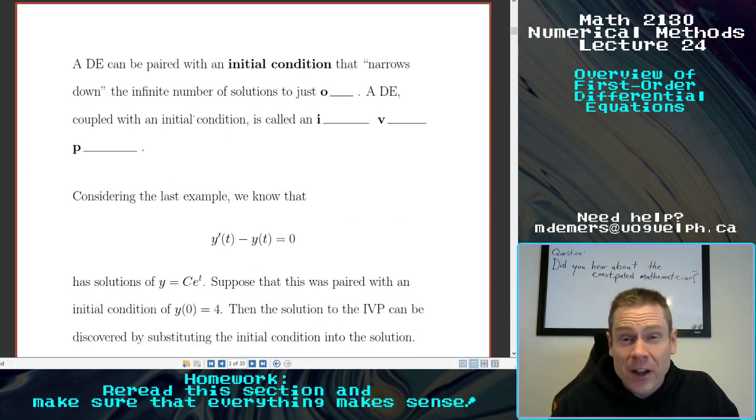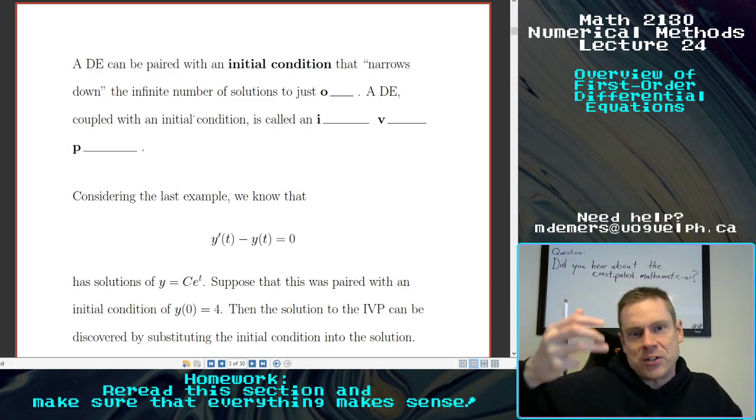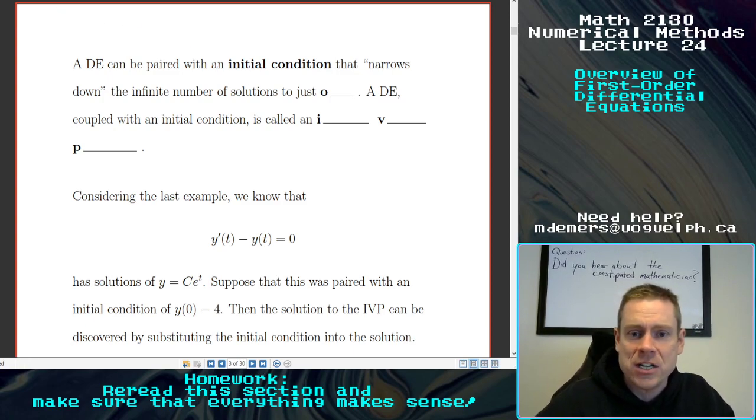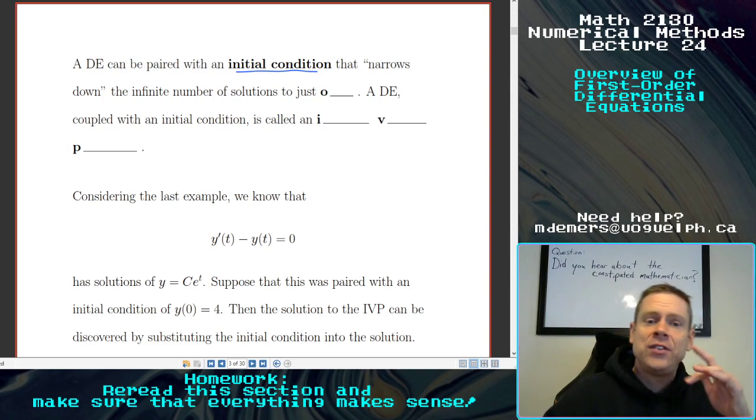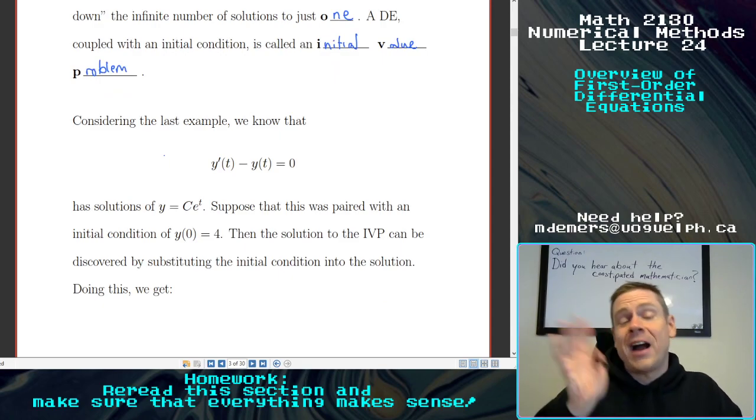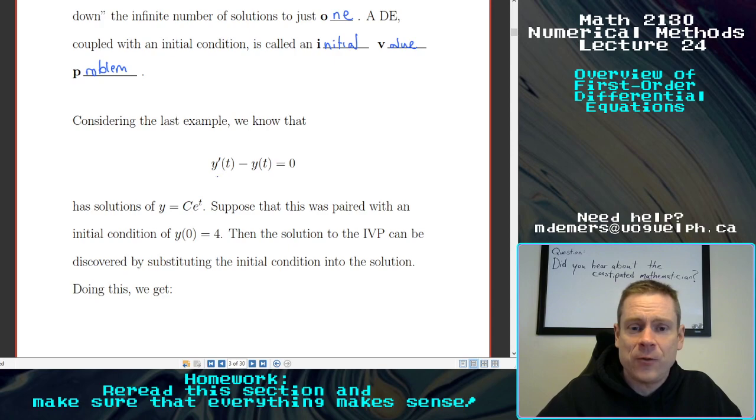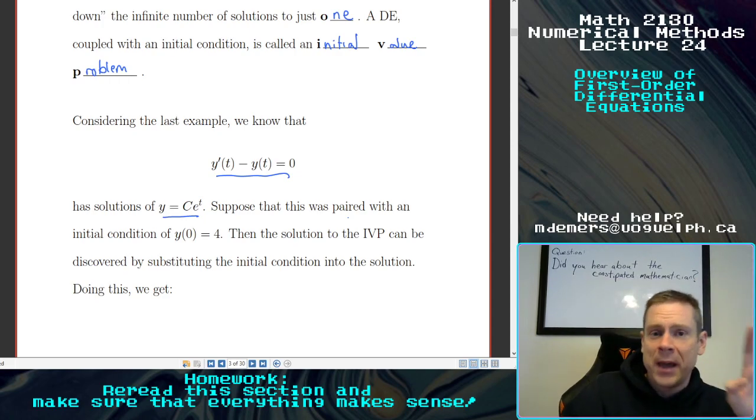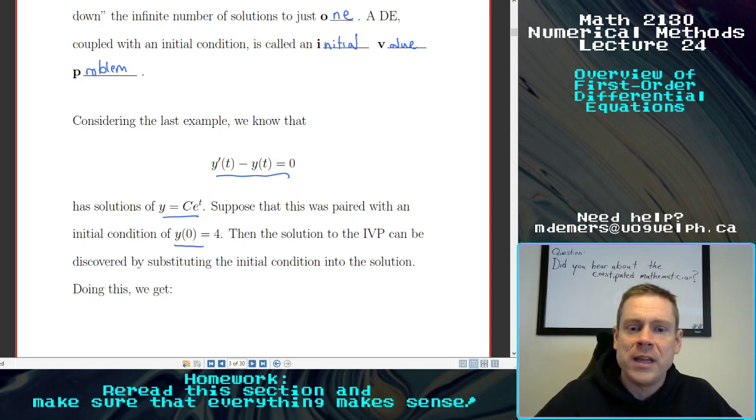But I said that we wanted to talk about initial value problems, and that actually takes the concept of differential equations and adds one extra aspect. A differential equation can be paired with an initial condition. And what an initial condition does is it narrows down the infinite number of solutions to just one. So a differential equation coupled with an initial condition is called an initial value problem. Okay. So we saw in that last example, because I told you what the solutions would be, right? This differential equation has a solution of c e to the t. And I hope you can see why, because I can sub that in, get left side equals right side.